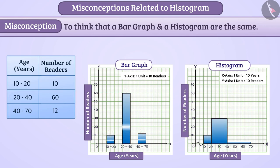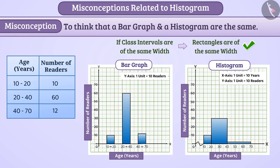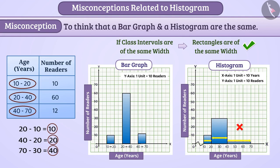Similarly, the bars in bar graphs are of the same width while it is not necessary in the histogram. If the class intervals are of the same width, then the rectangles are the same width, but if the class intervals are not of the same width, then the rectangles are also not of the same width.